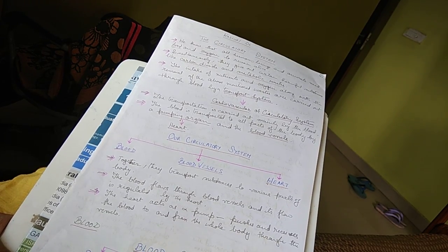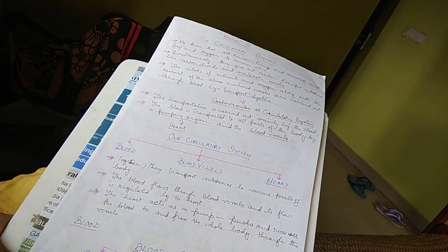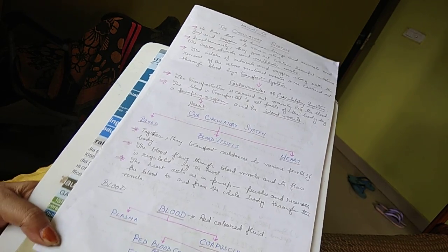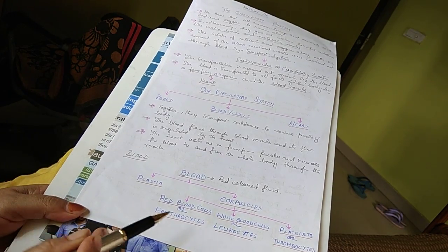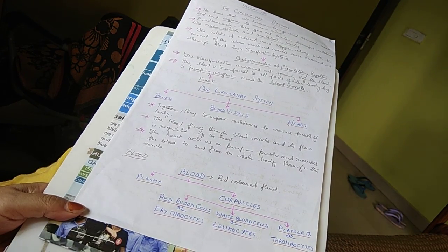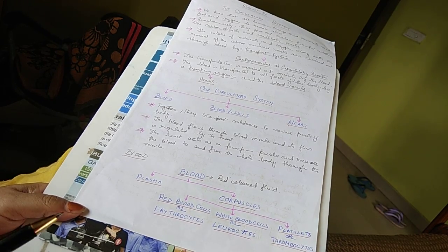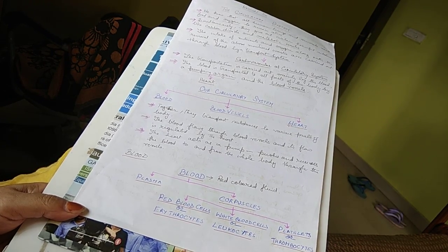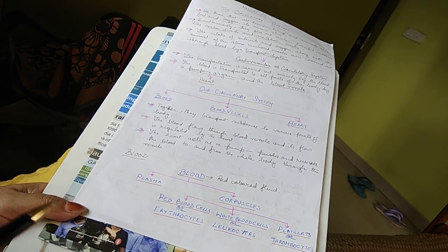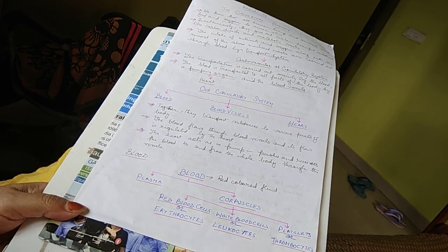Blood is red in color and it's a fluid and it is divided into two parts: plasma and corpuscles. Corpuscles - plasma is the liquid part, corpuscles is the cellular part. Corpuscles is divided into three parts, three types of corpuscles: red blood cell or erythrocytes, white blood cell or leukocytes, platelets or thrombocytes.